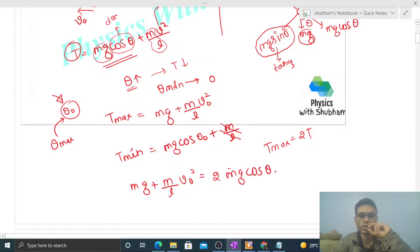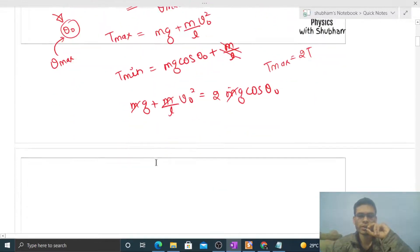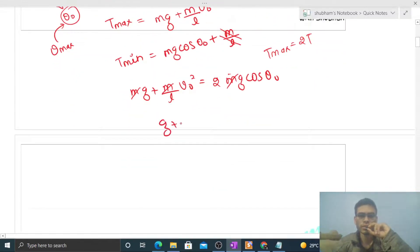From here, m cancels. What you are getting is g plus v naught square by L equals twice of g into cos theta naught.